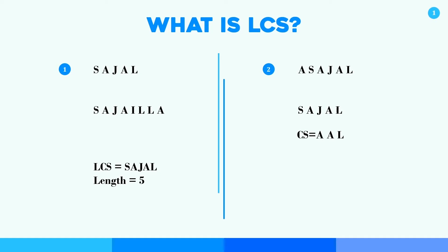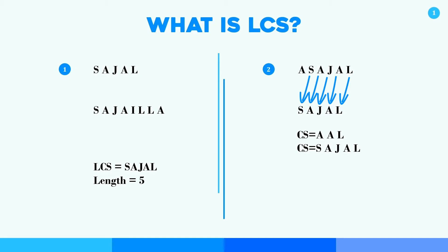Now we can find another common subsequence. So let's start from S — S and S is matching. Then A and A is matching, J and J is matching, A and A is matching, and L and L is matching — so totally it maintains our sequence. So this common sequence will be S, A, J, A, L. We can compare the two common sequences and say that S, A, J, A, L is the longest common subsequence here.